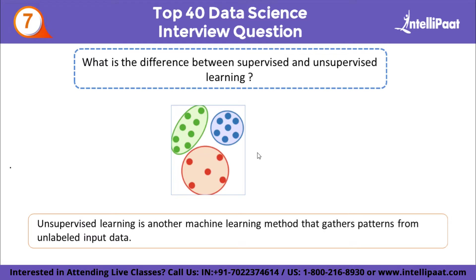Unsupervised learning seeks to extract structure and patterns from input data with no supervision. It discovers patterns in the data on its own. It can be used for two types of problems: clustering and association. We provide only the input dataset; the model trains itself and divides data into different groups according to the most similar features between them using a suitable algorithm.